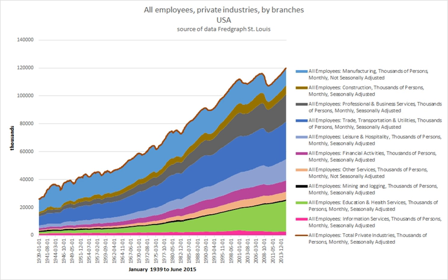In the United Kingdom, employment contracts are categorised by the government into the following types. Fixed-term contracts last for a certain length of time, are set in advance, end when a specific task is completed, or ends when a specific event takes place.